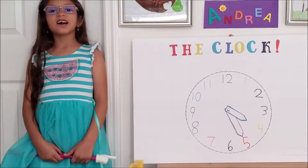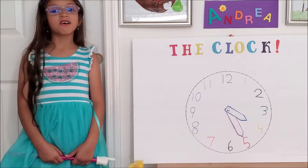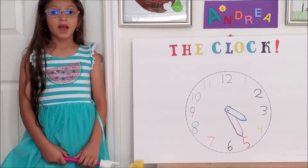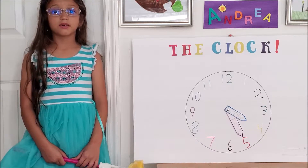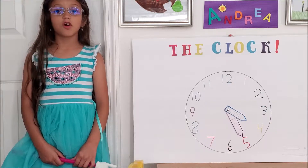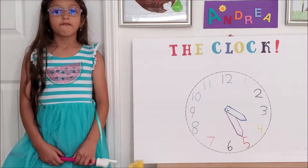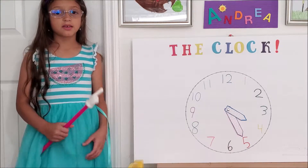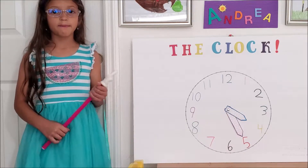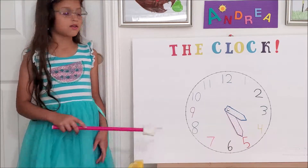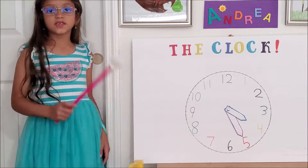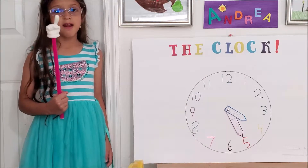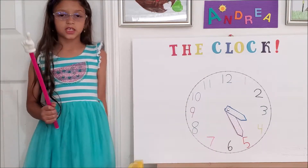The analog clock has 12 hours and 60 minutes. The hour hand goes around 12 hours for the day and 12 hours for the night. The minute hand goes around 60 minutes for each hour.